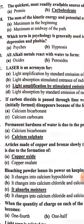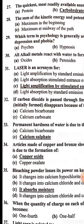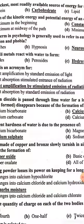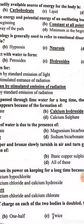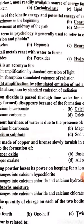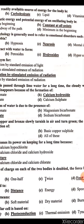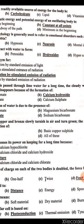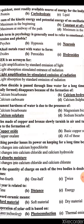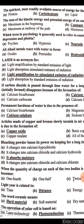The quickest and most readily available source of energy for the body is carbohydrate, which is mostly available in sugar. The sum of kinetic energy and potential energy of an oscillating body is constant at all points.